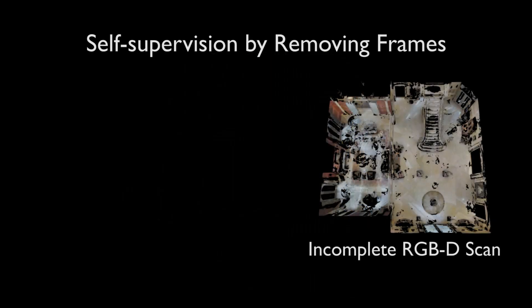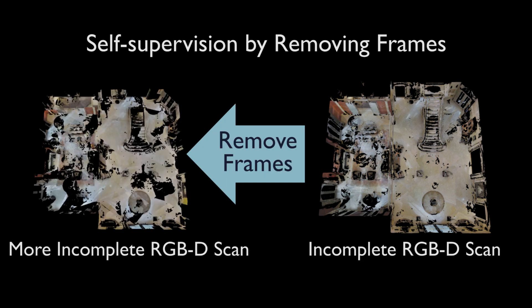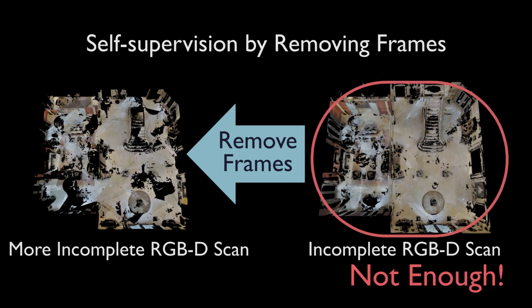First, we take an incomplete RGB-D scan and remove frames to create a more incomplete scan, creating input-target pairs. However, an incomplete 3D target is insufficient to effectively learn to generate complete geometry and color.